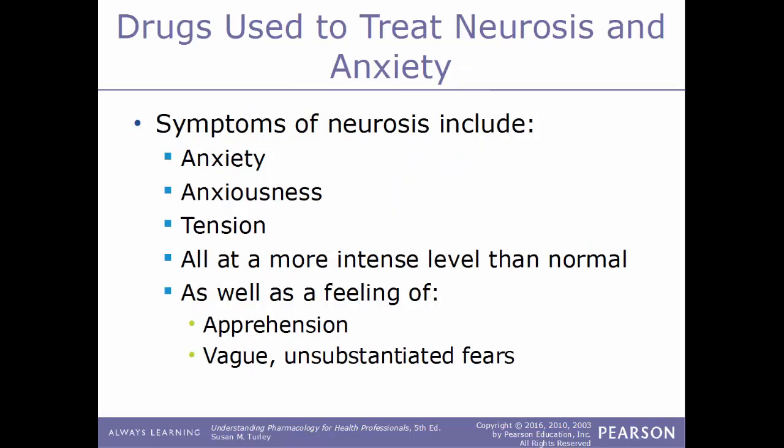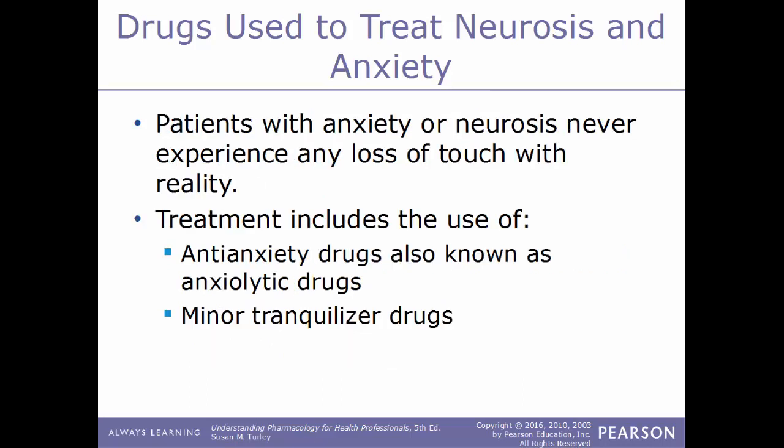The first conditions we'll talk about involve drugs used to treat neurosis and anxiety. Common symptoms of neurosis include anxiety, anxiousness, and tension, often at a more intense level than normal. The person may also have a feeling of apprehension and vague, unsubstantiated fears. Patients with anxiety or neurosis never experience any loss of touch with reality, which is not always the case for mental illness.